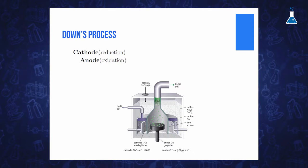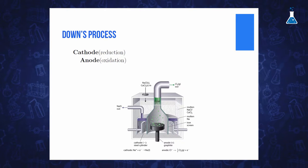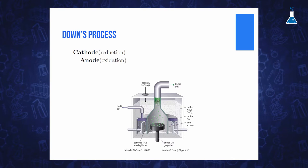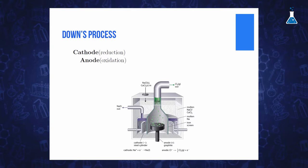Inside the cell, sodium and chloride ions are free to move in the molten media. Sodium ions are reduced at the cathode, while the negatively charged chloride ions are attracted to the anode and oxidized. The reactions that take place at both electrodes are the following.